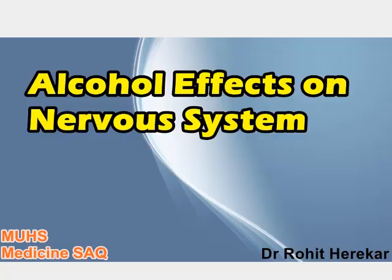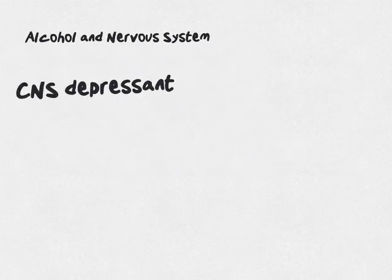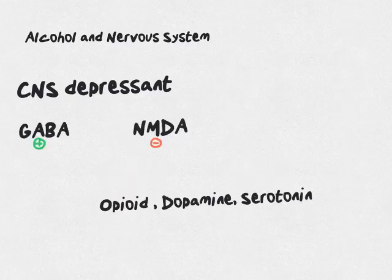Hello everyone. In this video we are going to see the effects of alcohol on our system. Alcohol acts basically as a CNS depressant. It stimulates the inhibitory neurotransmitter GABA and it inhibits the excitatory neurotransmitter NMDA.